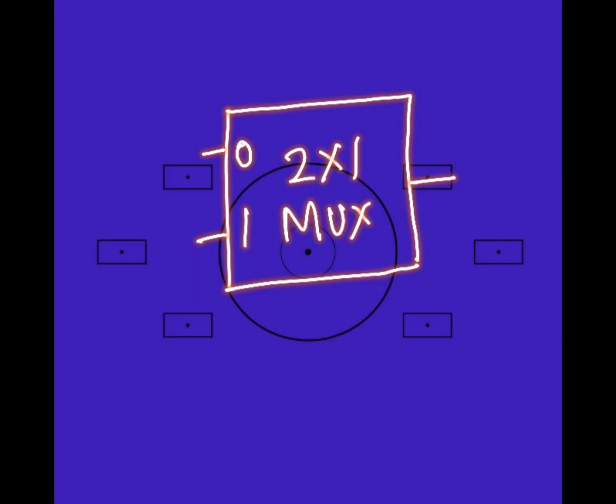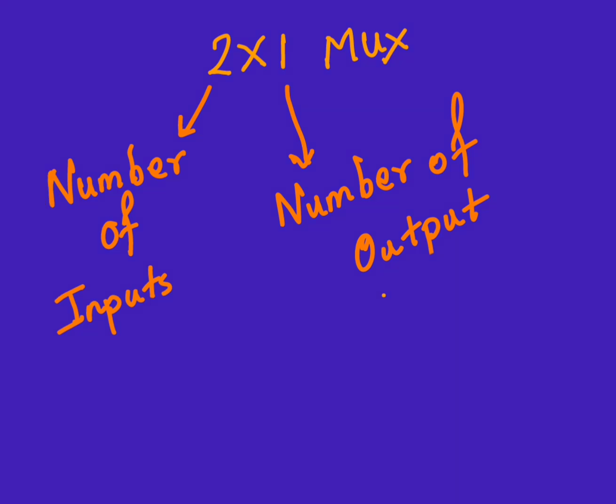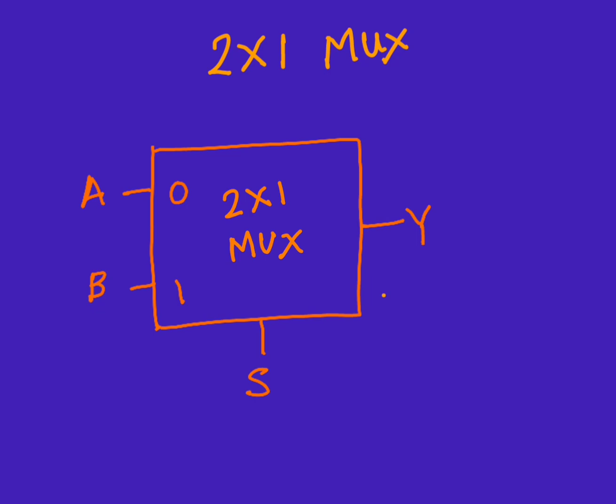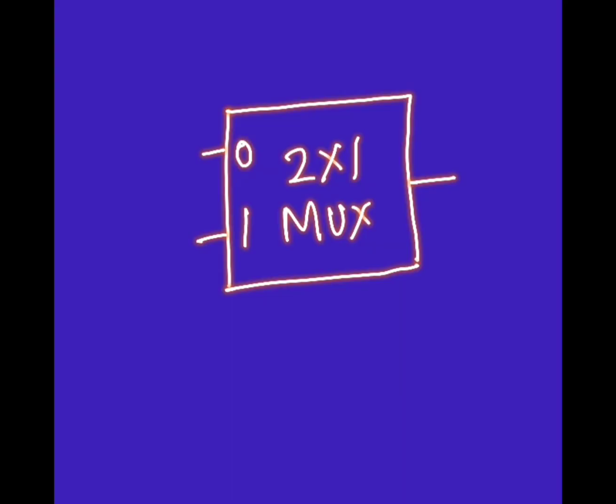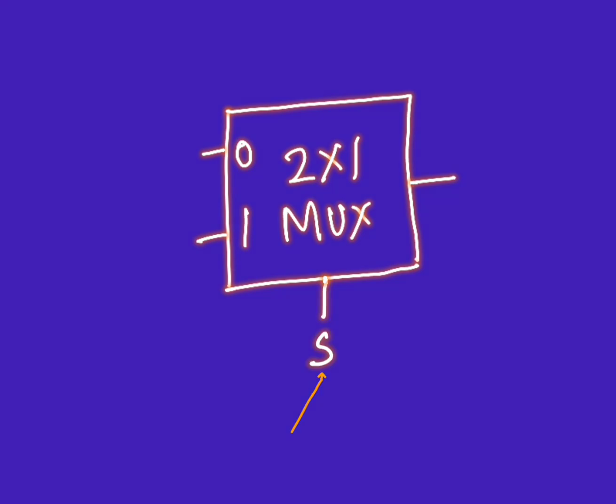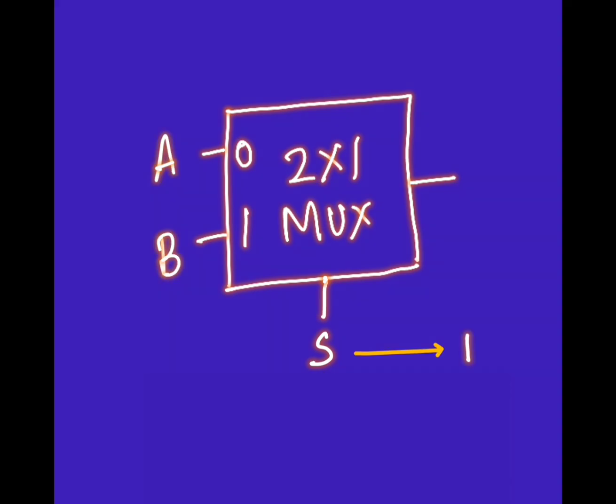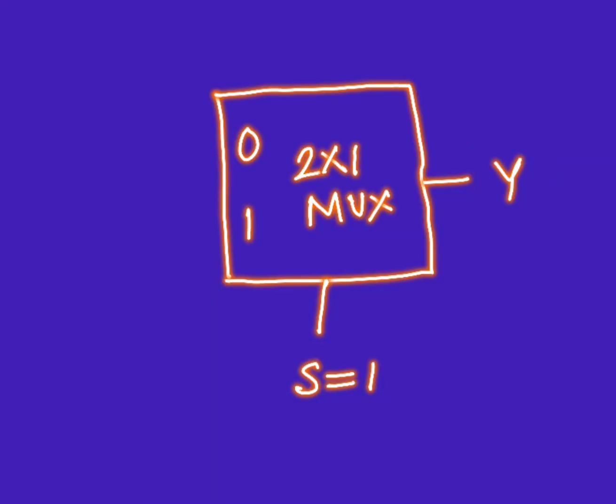In a 2-to-1 MUX, 2 means the number of inputs and 1 is the number of output. Depending upon the value of S, whether it is 0 or 1, the output Y is going to have a value. The main purpose of using a multiplexer is that depending upon the select line, the output will have one of the input values. In this case, if S is 1 then the output will be the same value which is at pin 1. If S is 0, then the output will be the same which is at pin 0.